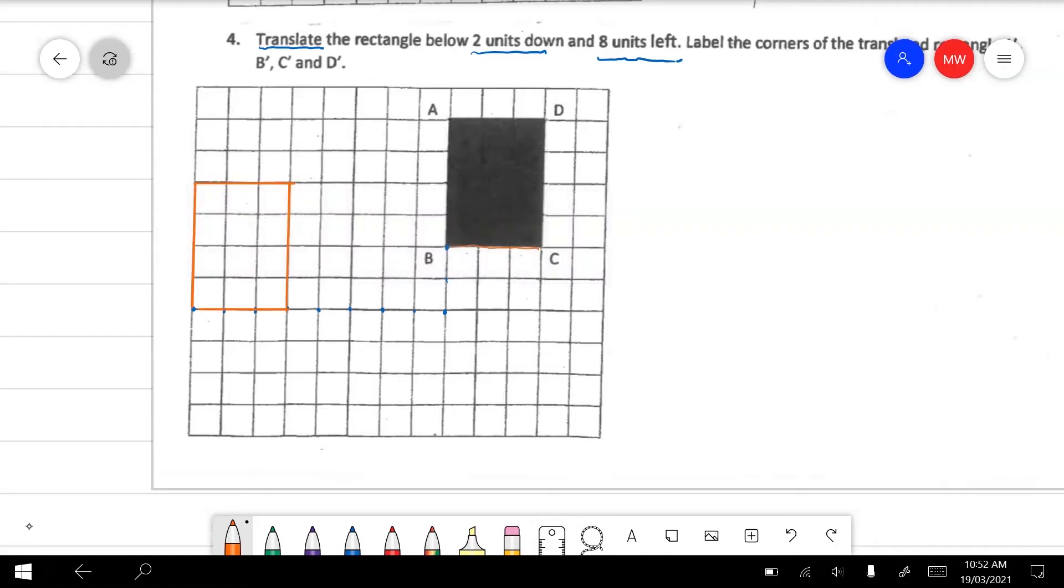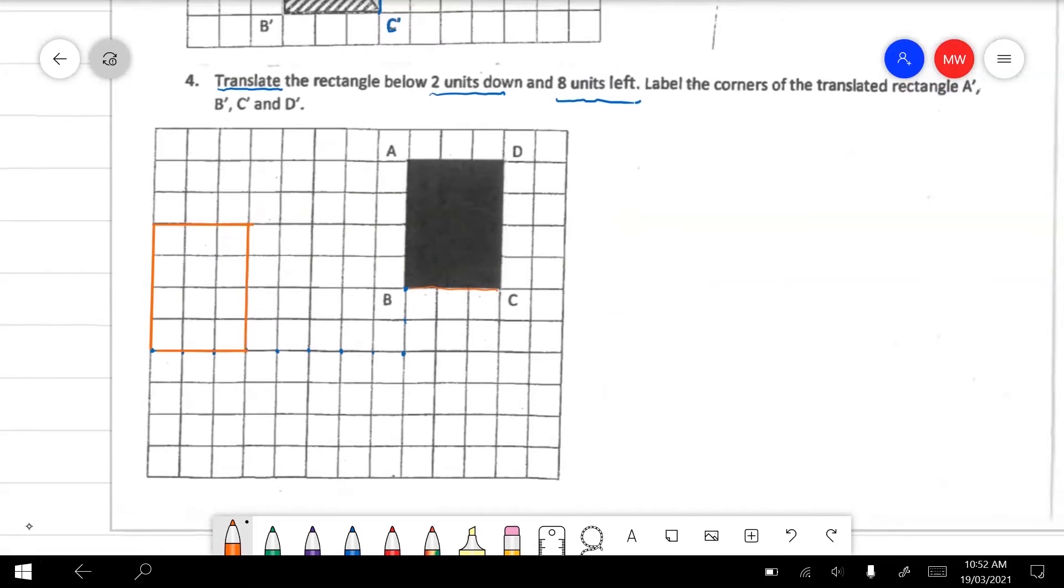And the last little point that we need to do is we need to label the corners. Now that means that A becomes A dash. B becomes B dash. C becomes C dash. D becomes D dash.